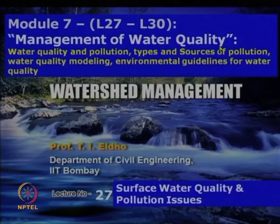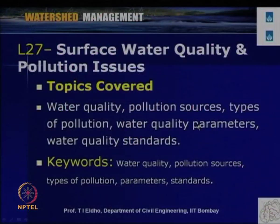This is specific to the watershed-related aspects. The topics covered in this module include water quality and pollution, types and sources of pollution, water quality modeling, and environmental guidelines for water quality. Today in lecture number 27 of module 7, we will discuss surface water quality and pollution issues. Topics covered include water quality, pollution sources, types of pollution, water quality parameters, and water quality standards.